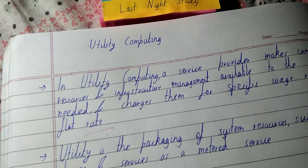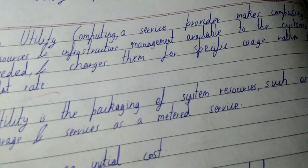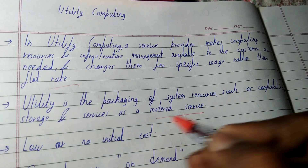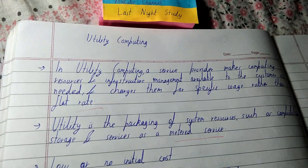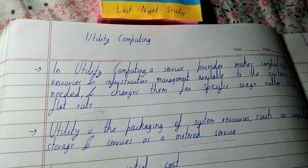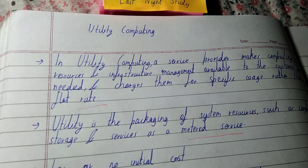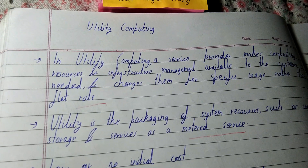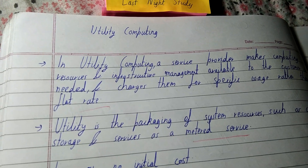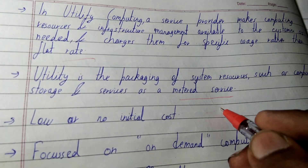When the customer needs to use it, then only they pay. When computing is not being done, others can use it. Utility computing treats system resources like computer storage as a metered service — just like a meter taxi. The more you travel, the more you pay. If you travel a shorter distance, you pay less. If you sit in the taxi without moving, the meter shows zero. You only pay for the distance you actually travel, at the applicable fare rate.